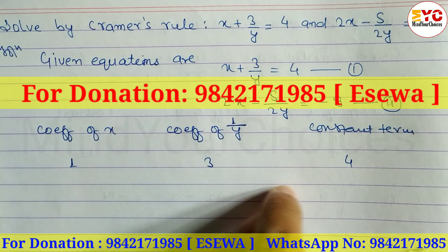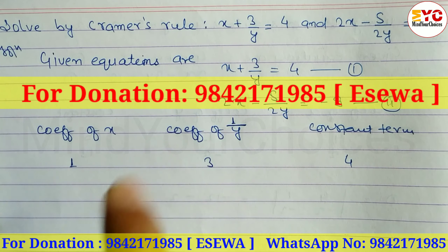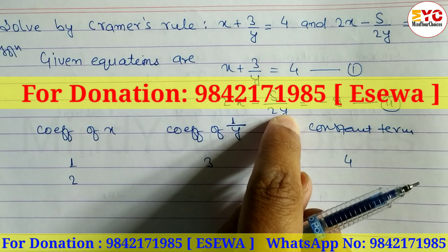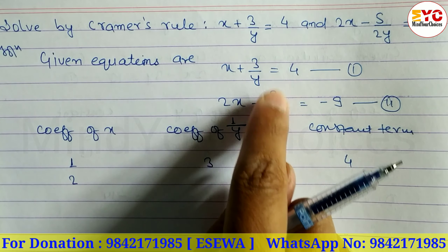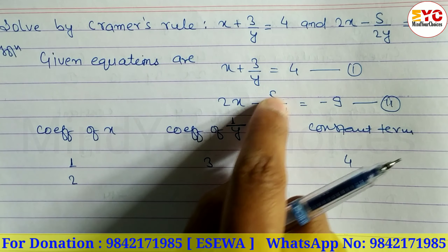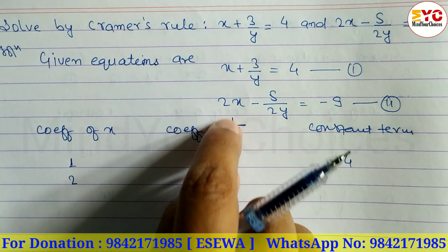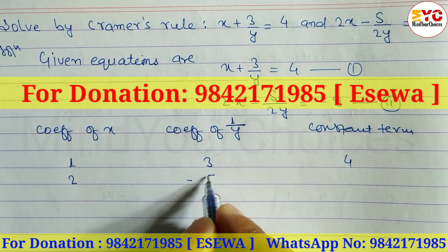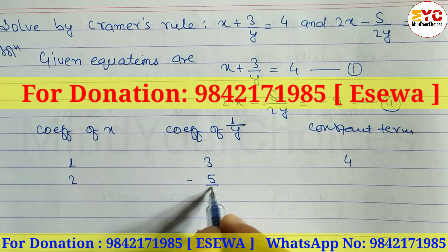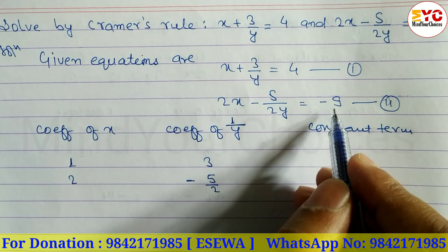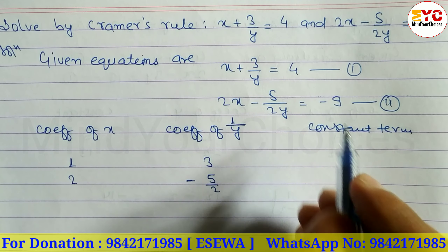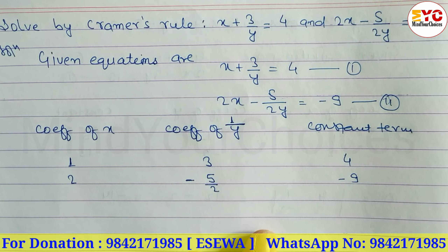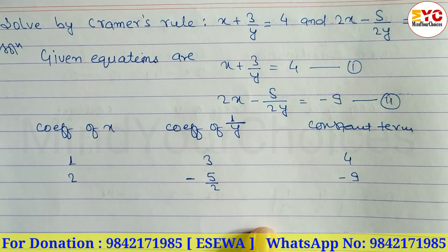Similarly, for Equation 2: coefficient of x is 2, coefficient of 1/y is −5/2 (as a fraction), and the constant number is −9.